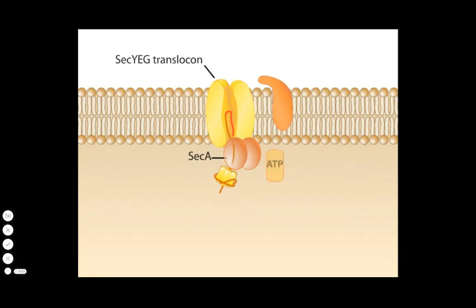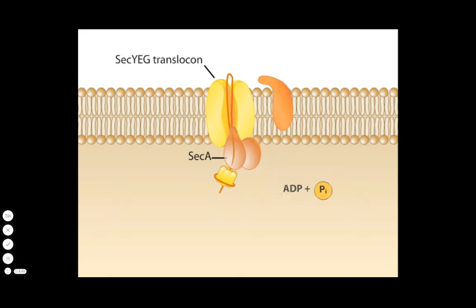SecA is an ATPase that appears to act like a plunger. It binds to ATP, allowing it to insert deep into the SecYEG channel, shoving about 20 amino acids of the target export protein into the channel. ATP hydrolysis causes SecA to release the protein and withdraw.